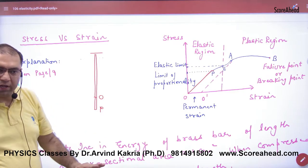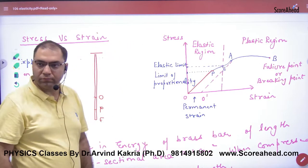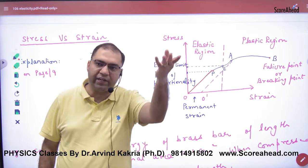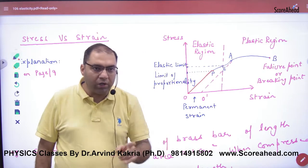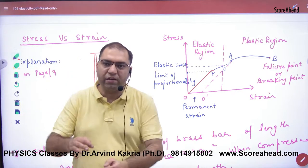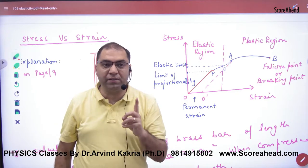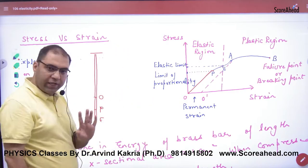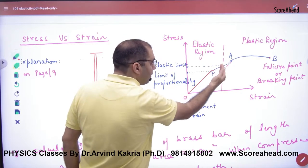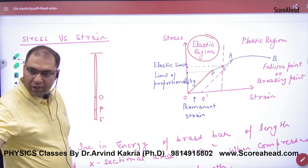Hooke's law will fail if you stretch beyond point E. When you cross E, the graph is no longer a straight line. This E is the elastic limit. If you leave the wire before reaching E, your wire will return to O with no problem. The region from O to E is the elastic region.